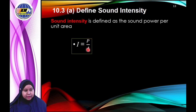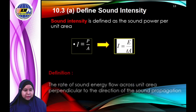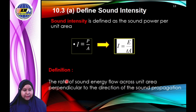The formula is: Intensity = Power / Area. The unit of intensity is watts per meter squared. Intensity can also be expressed as energy per time divided by area, where power equals energy per time. We can also define intensity as the rate of sound energy flow across unit area perpendicular to the direction of sound propagation.